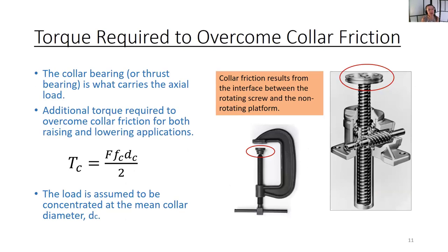You also have to provide some torque required to overcome collar friction in power screws. The collar bearing or thrust bearing is what carries the axial load. So in a C-clamp, the collar would be this platform with the red oval around it. Looking at this equation, Tc equals force times collar friction times mean collar diameter divided by two, we can see it is just torque equals force times distance multiplied by friction.